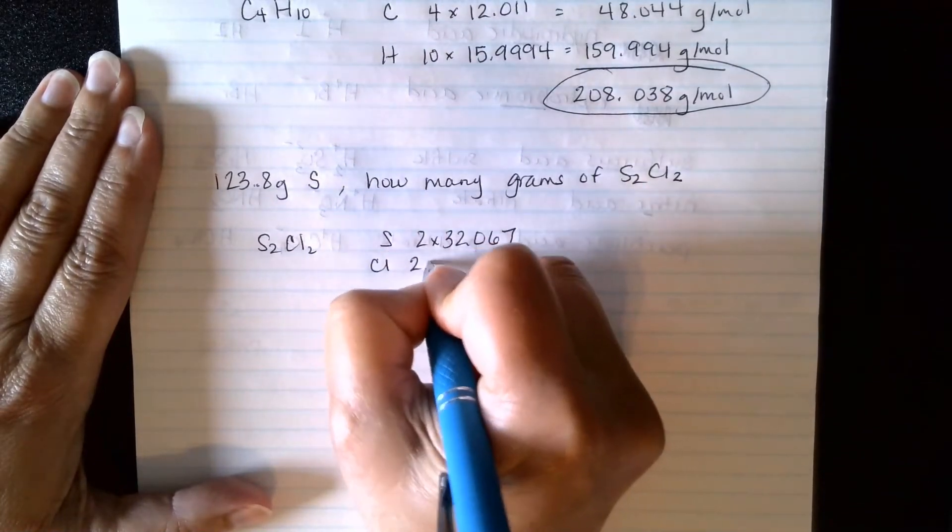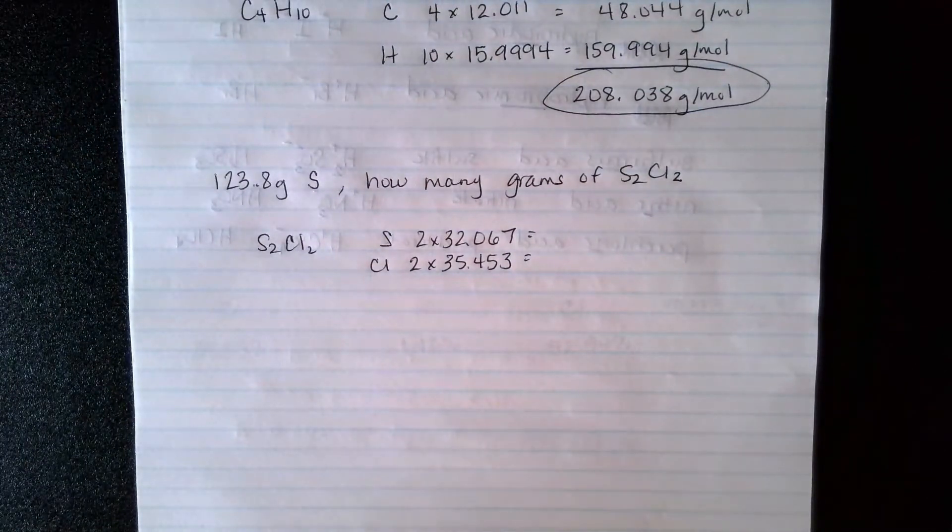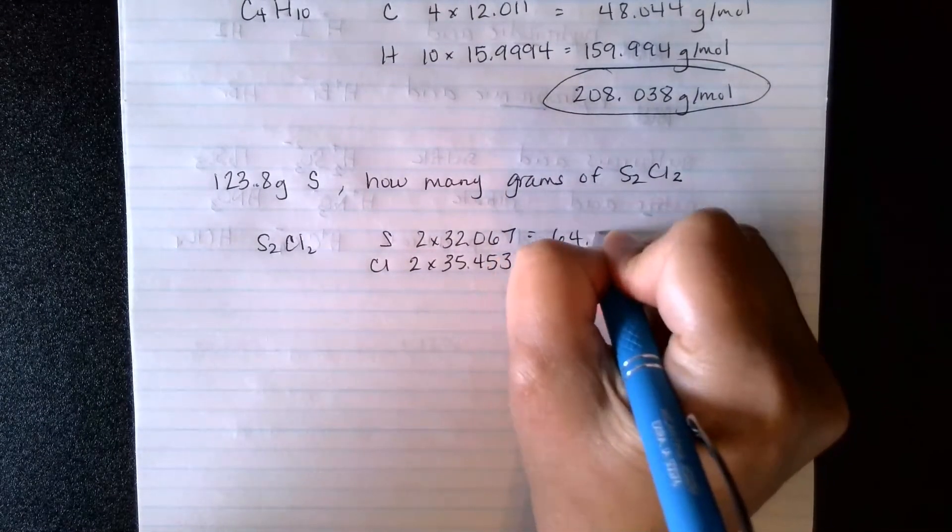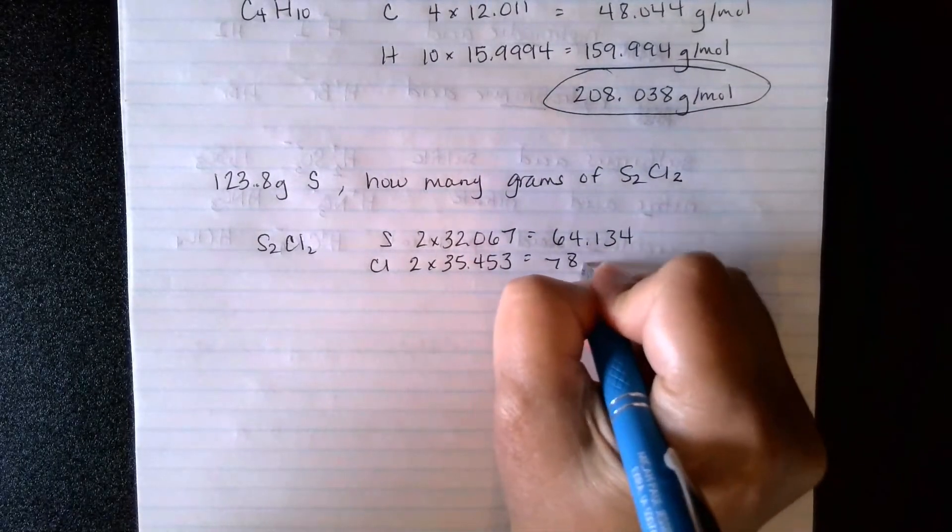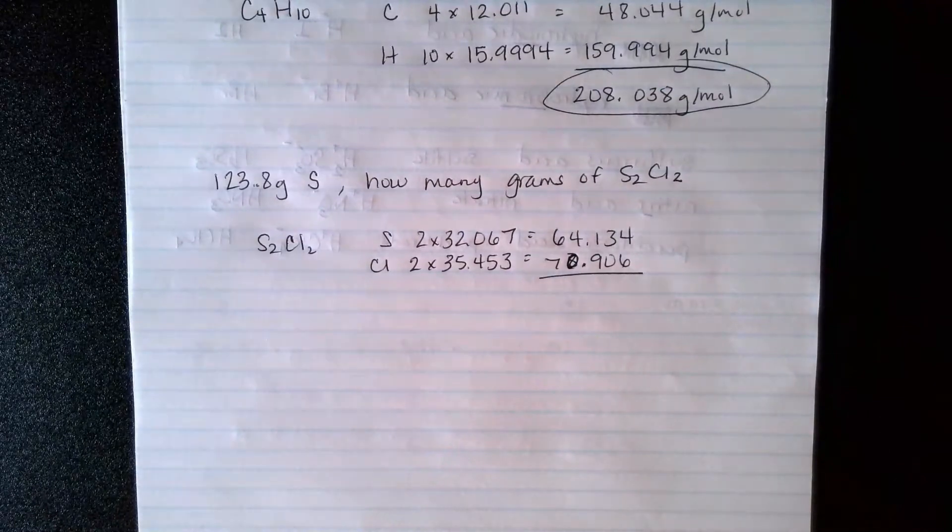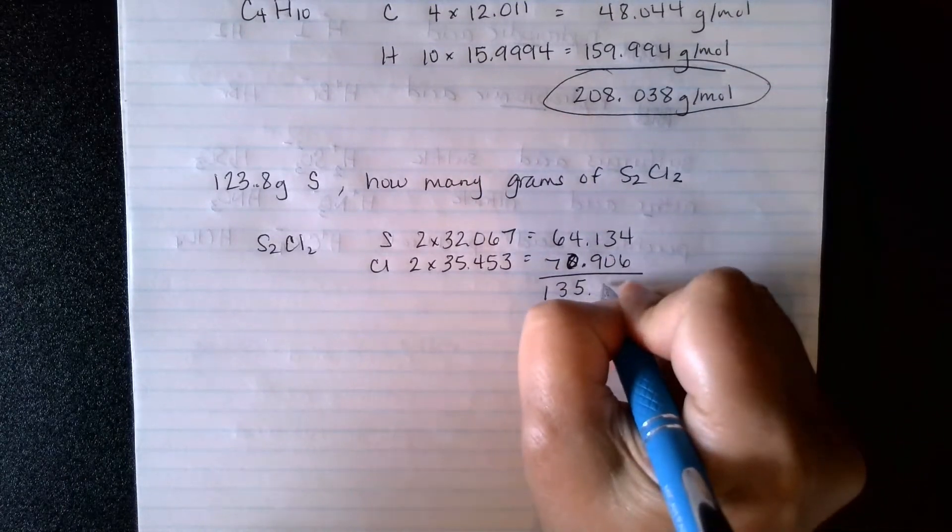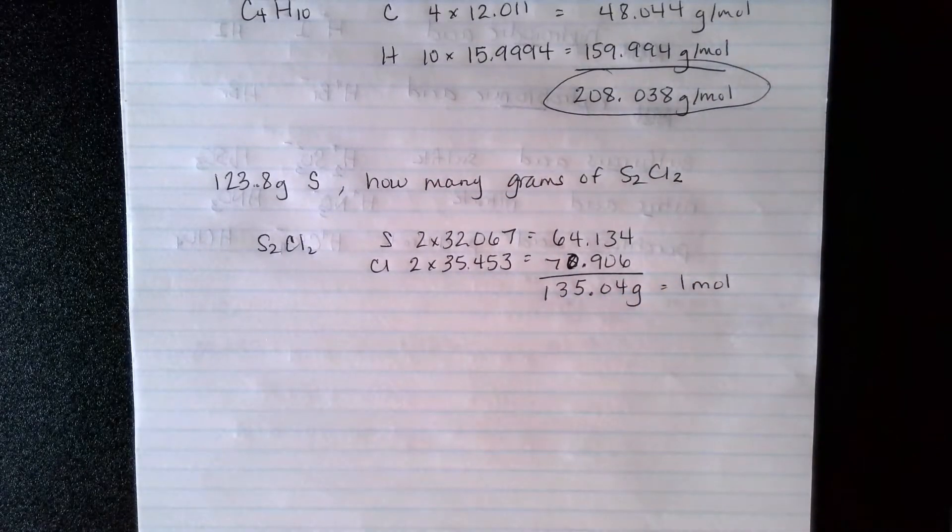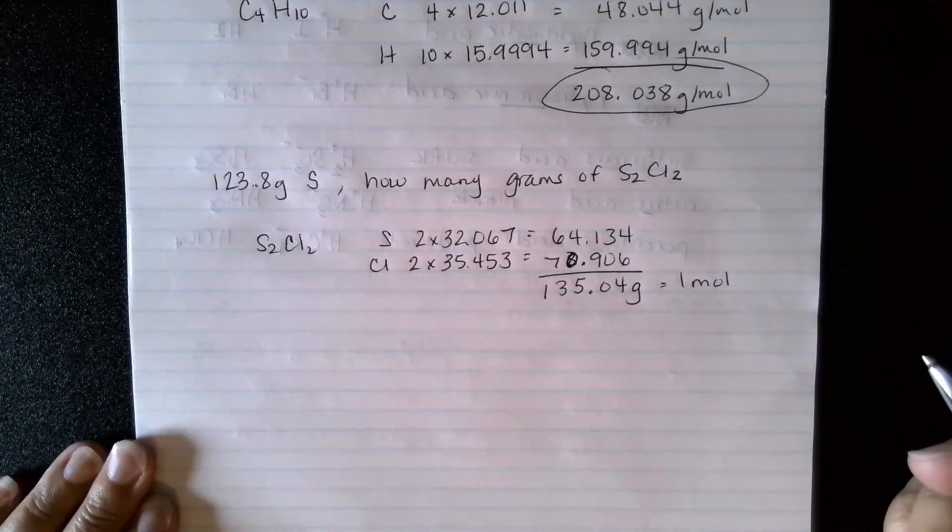Okay. And then two chlorines. And I looked up the masses off the periodic table. So we're just going to calculate. Alright, so that tells me how many grams are in a mole. We wrote it here, grams per mole, so I could write it as a conversion factor like that, 135.04 grams in one mole.